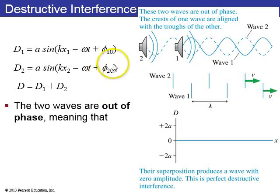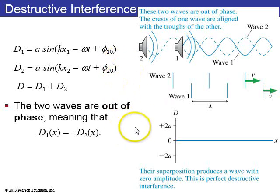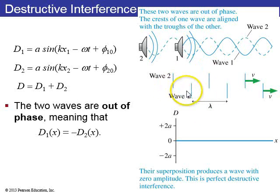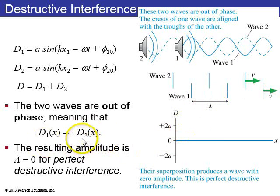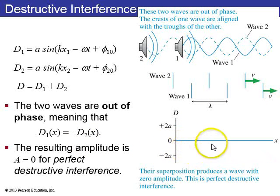Now if these two phase constants differ by pi, or 3pi, or something like that, the waves are out of phase. The wave fronts from wave 1 are halfway between the wave fronts from wave 2, so a crest matches up with a trough from wave 2. When you add them up, d1 equals negative d2 for all values of x, and you get perfect destructive interference. You actually get silence when you combine these two sound waves — you hear nothing.